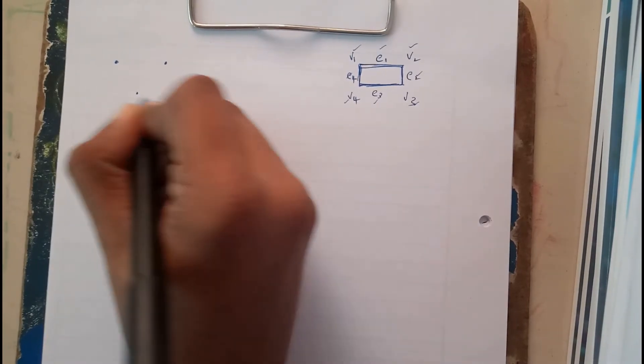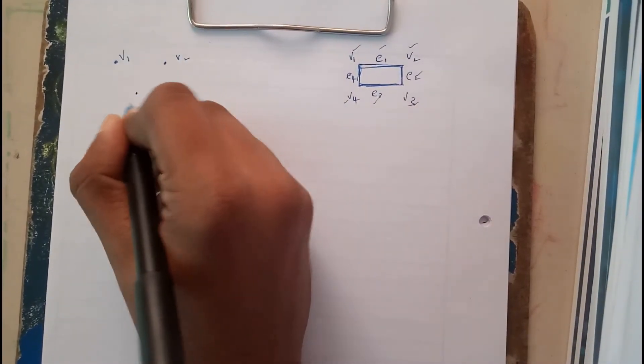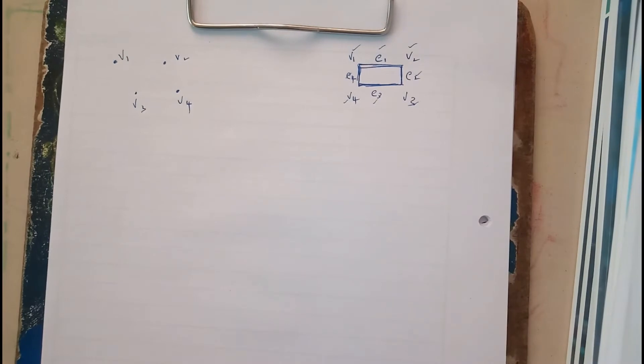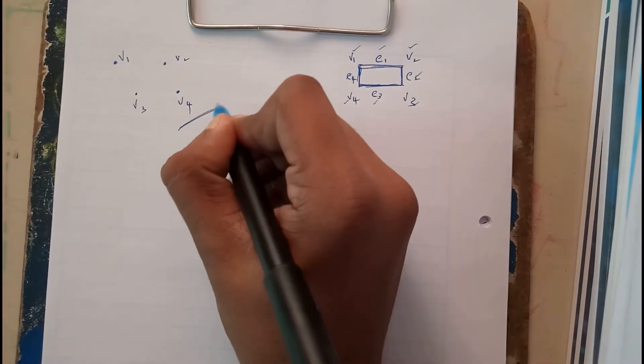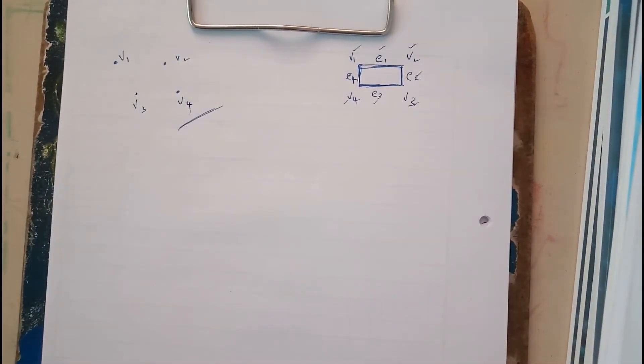So let us assume we got 4 vertices: v1, v2, v3, v4. Hence this is a Null Graph as there are no edges. As the number of edges equals to 0, it is called a Null Graph.